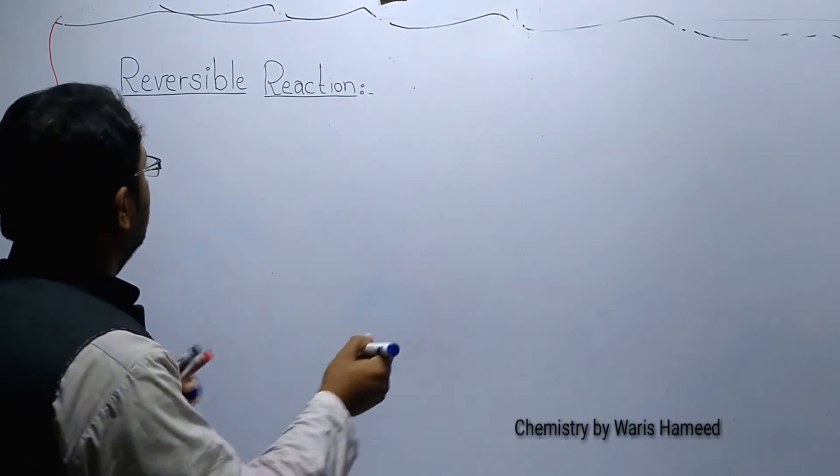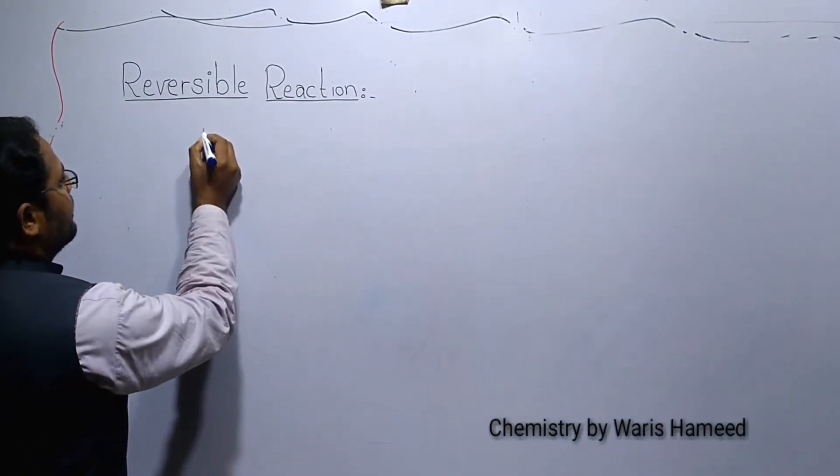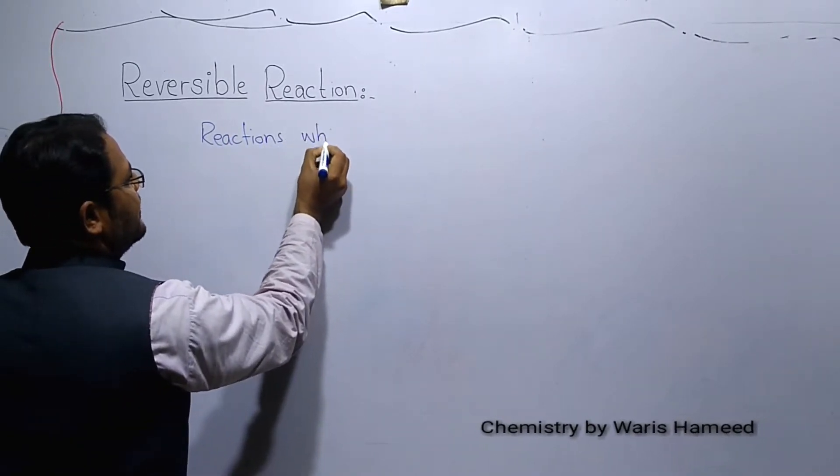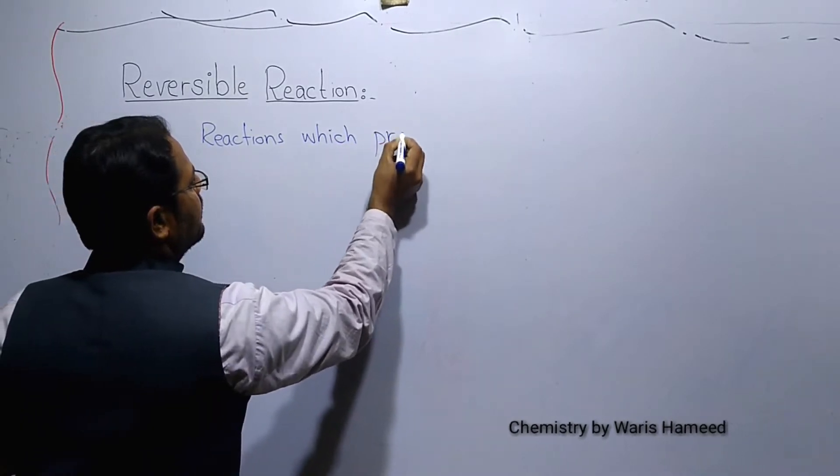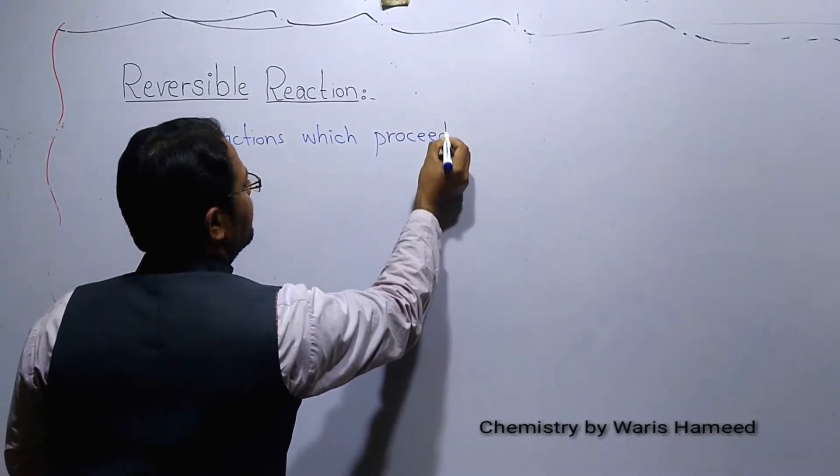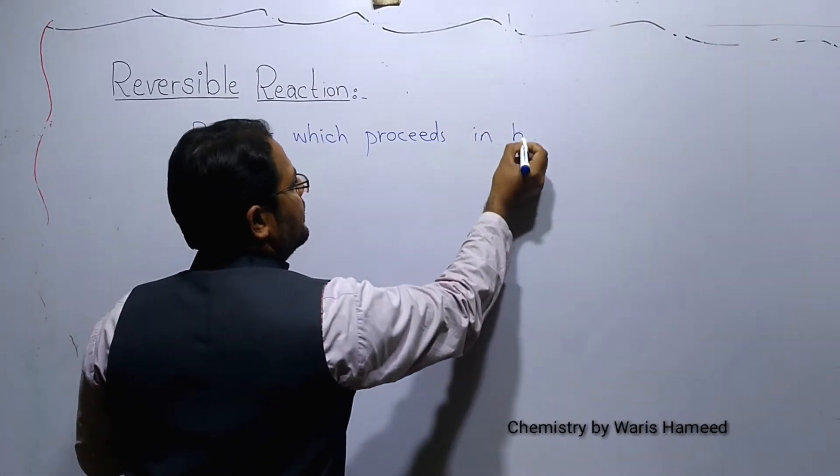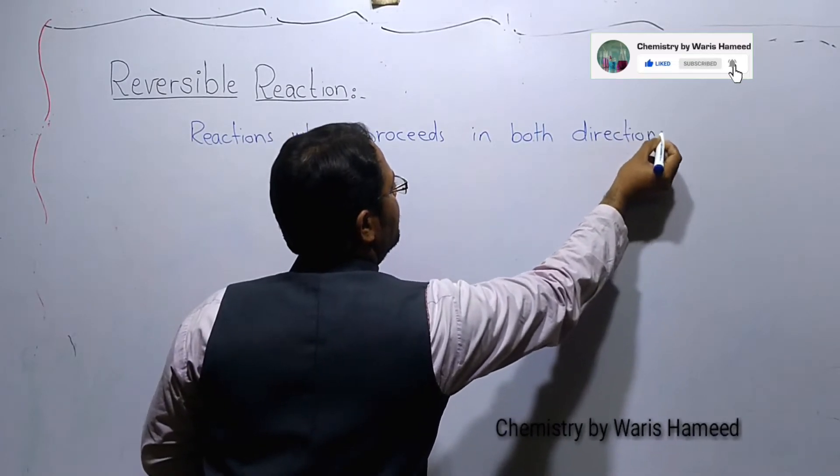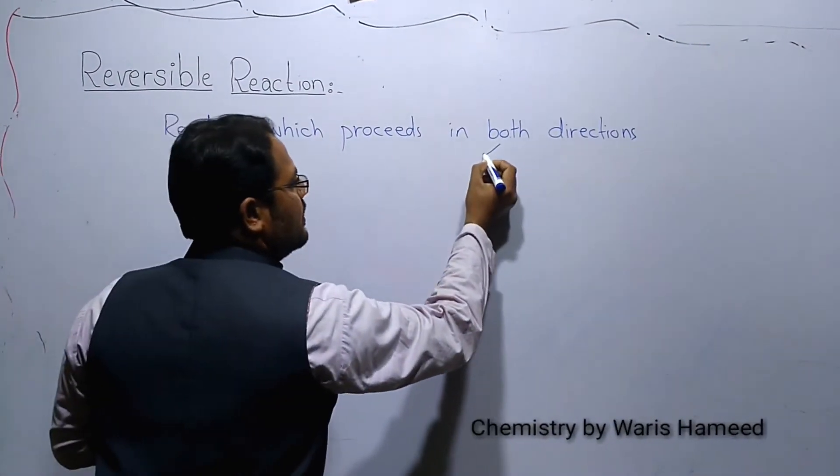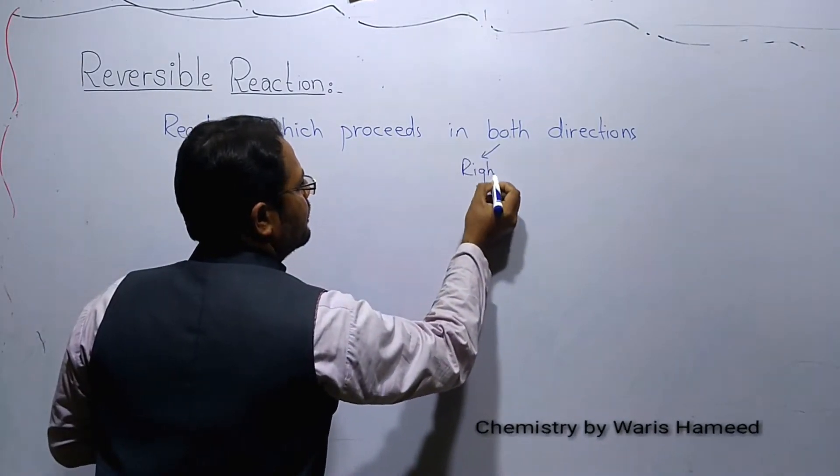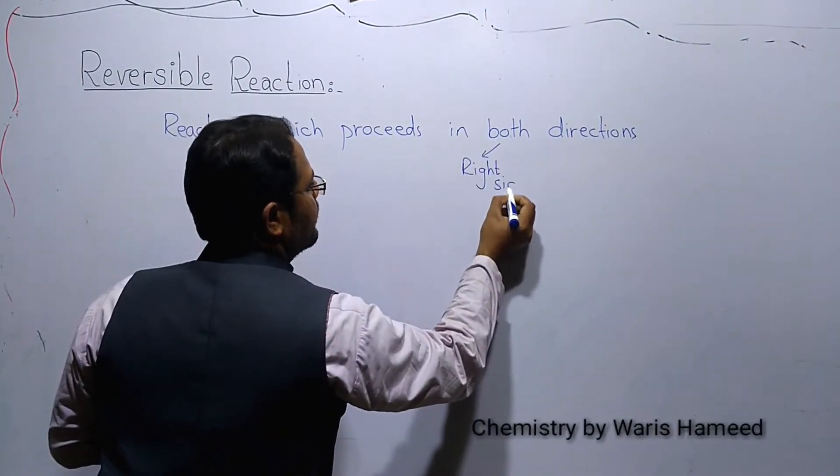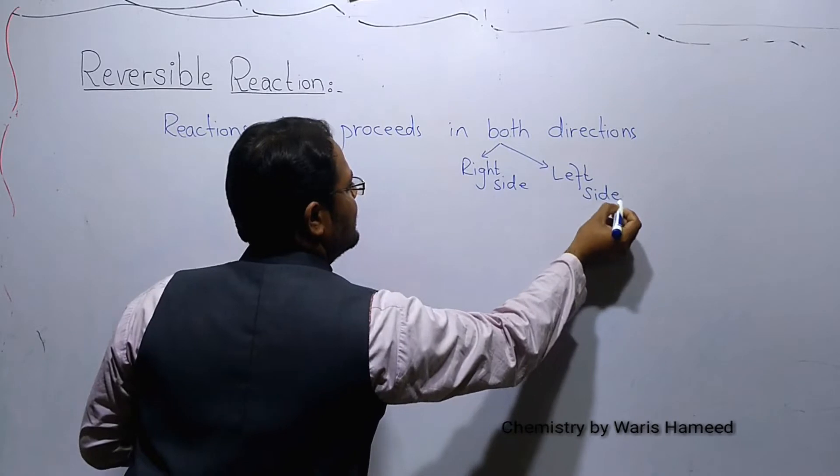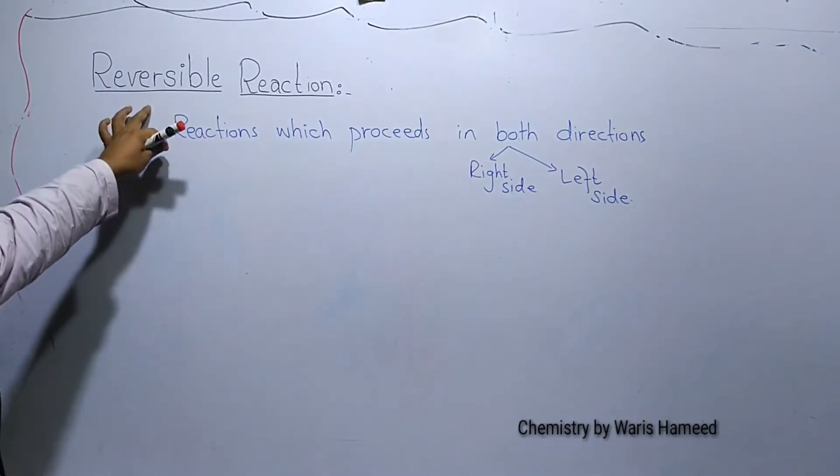We can write it as: reactions which proceed in both directions. Both directions being right side and left side. These types of reactions are known as reversible reactions.